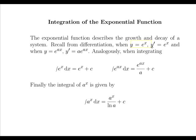When we differentiated e to the x, we got e to the x, and when we differentiate e to the ax, we get ae to the ax. So it follows that when we integrate e to the x, we get e to the x plus c, and when we integrate e to the ax, we get e to the ax over a plus c.